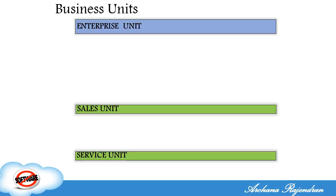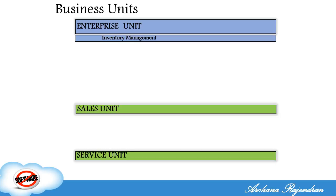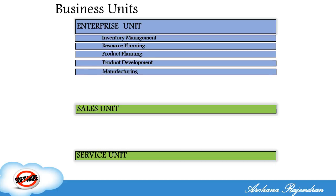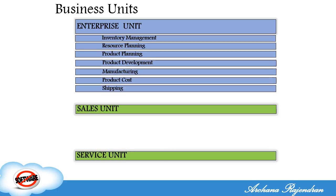What's next? A service unit, because post-sales service is required. For any product we buy, we expect service post-sales — that's the service unit. The sub-units of the enterprise unit include inventory management, resource planning, product planning, product development, manufacturing, product cost, shipping, and payment.